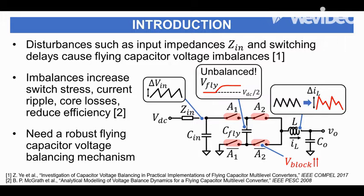There is natural balancing, which will cause the flying capacitors to tend towards their nominal balanced voltages. But literature has shown that this process is relatively unreliable and cannot be relied on to compensate for all disturbances. We need a more robust mechanism to passively balance the flying capacitors.